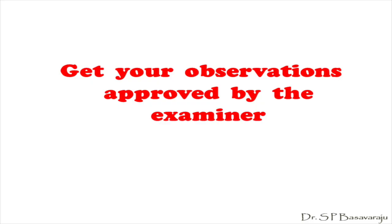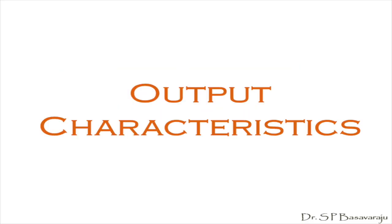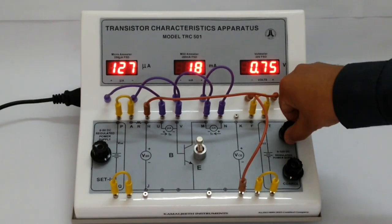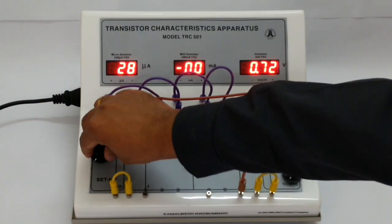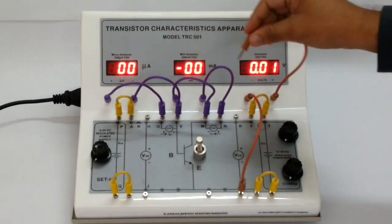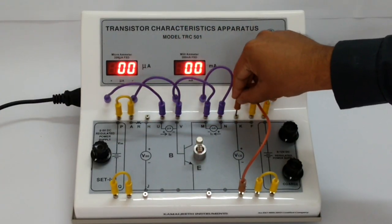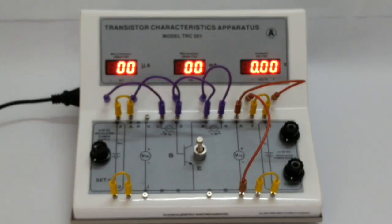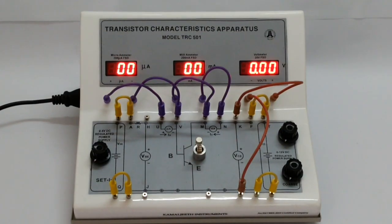Now let us see about the output characteristics. Turn all the knobs to their minimum positions. There is only one connection to be made now which is actually a reconnection of the voltmeter. The lead connected from voltmeter to the positive point on the circuit in the input side is disconnected and the same lead is connected to the positive point in the output side. Now the voltmeter measures VCE.